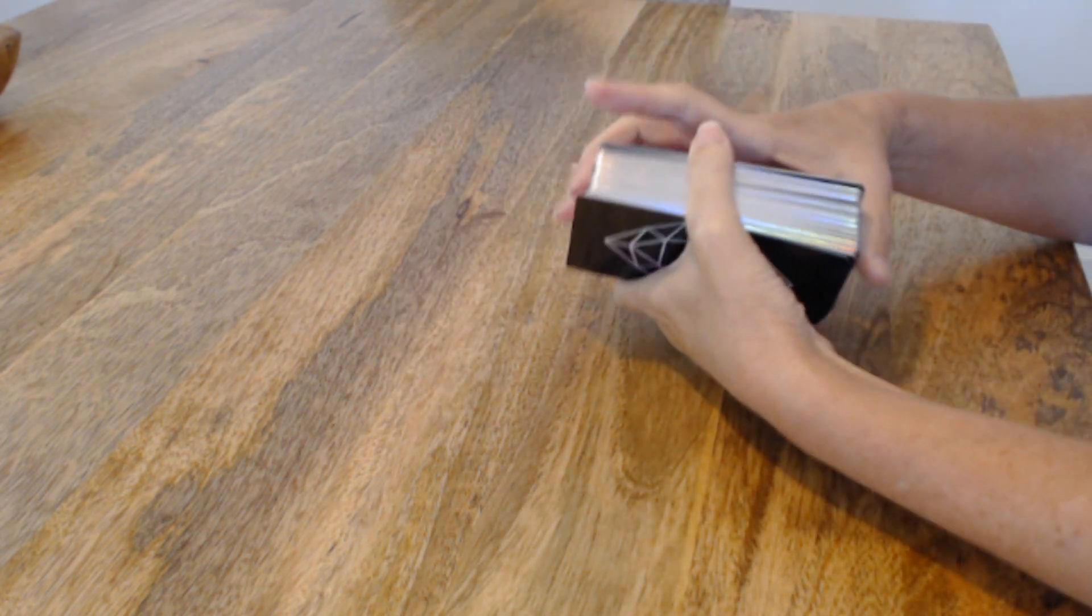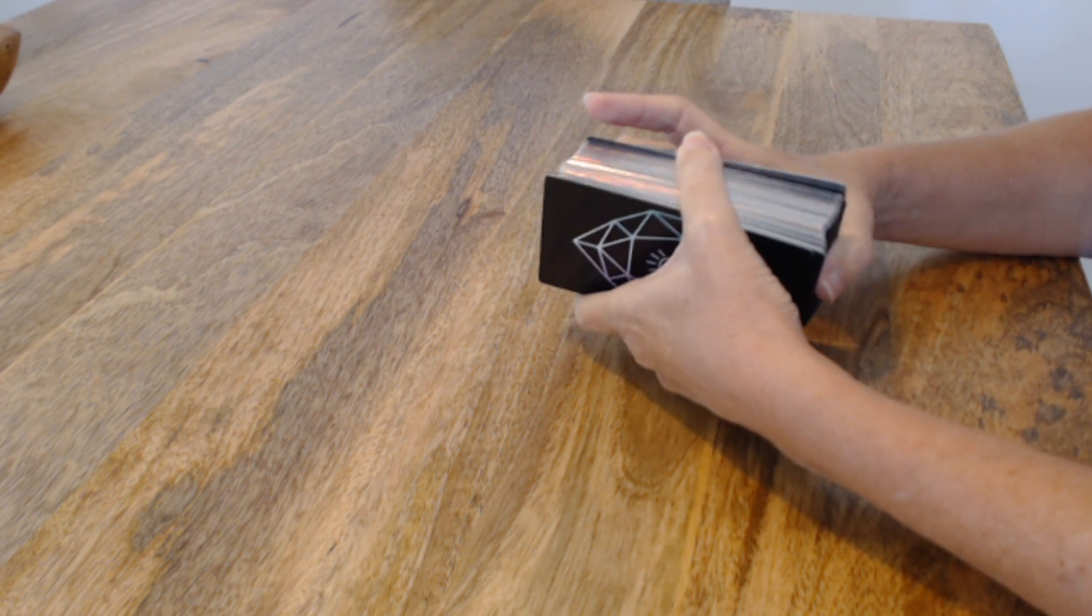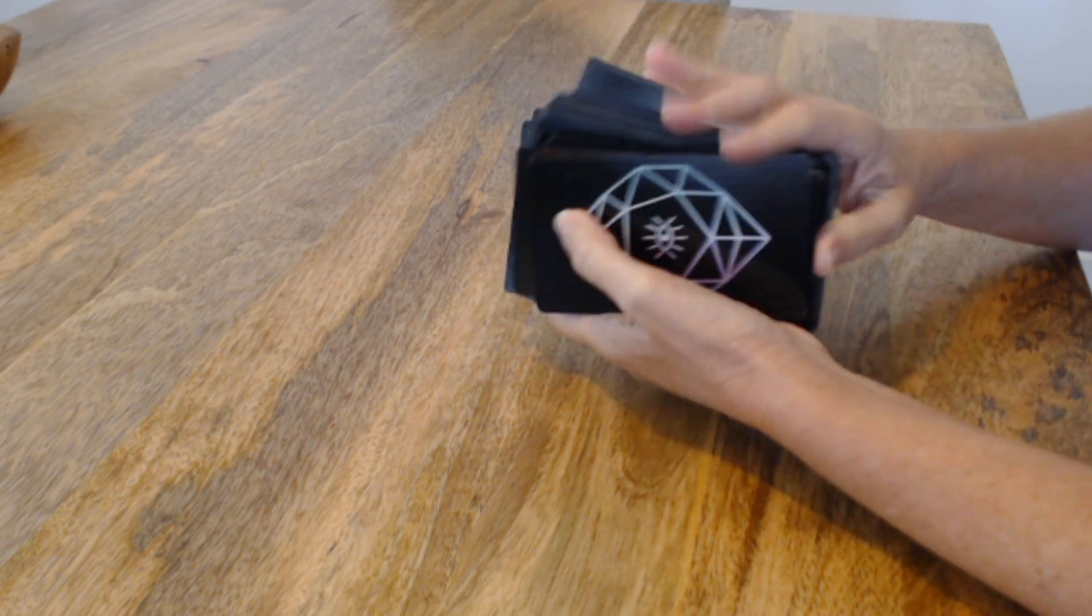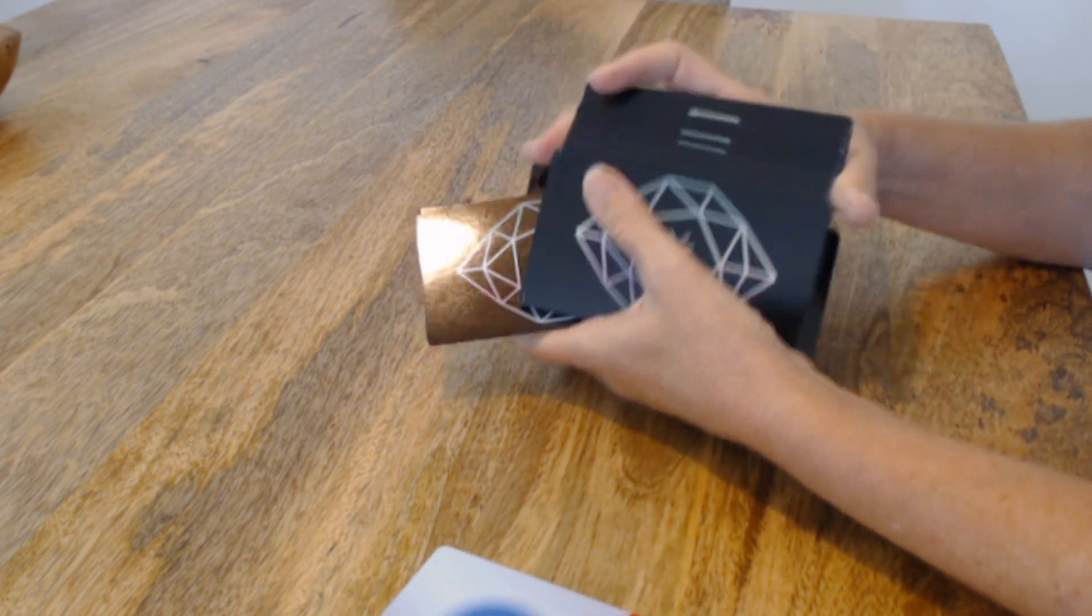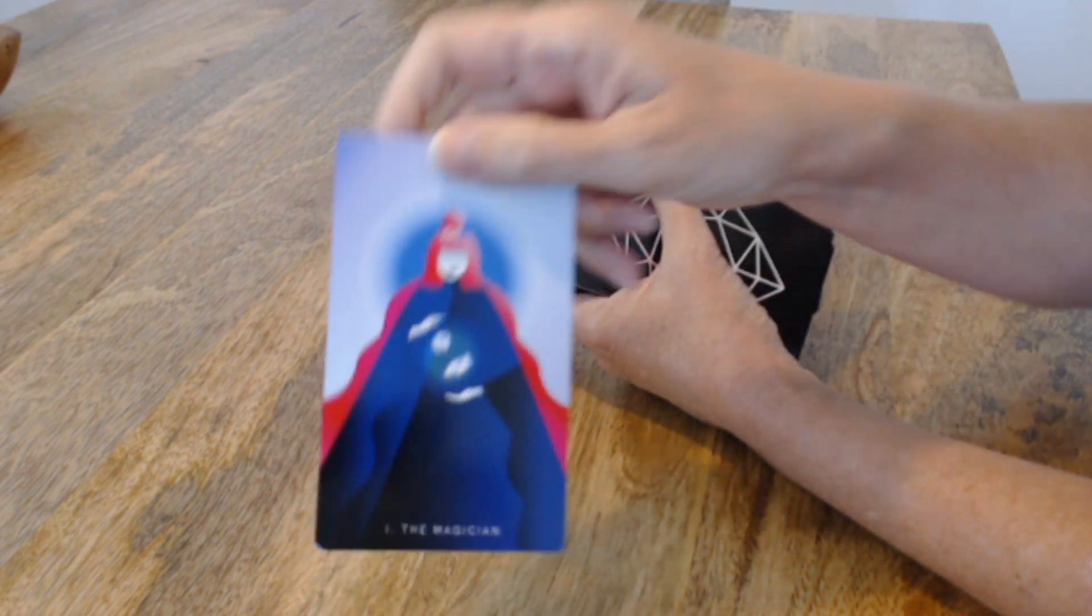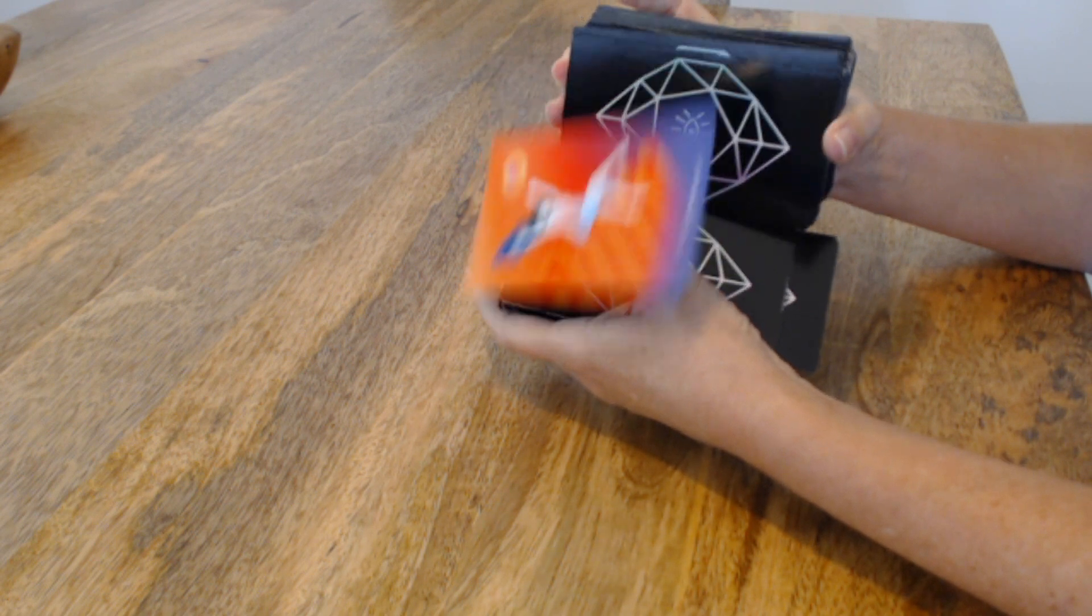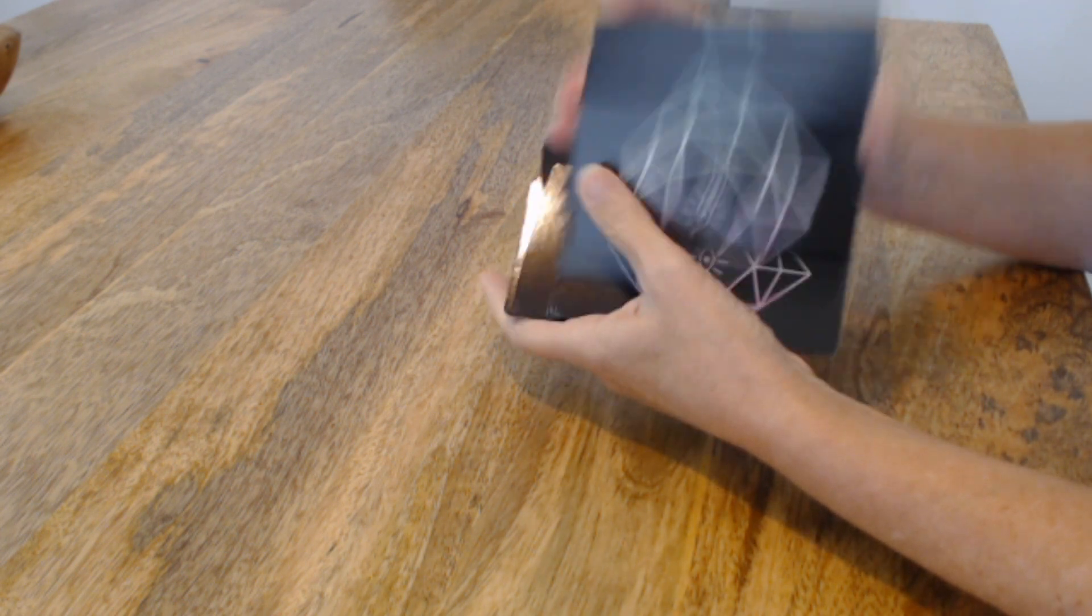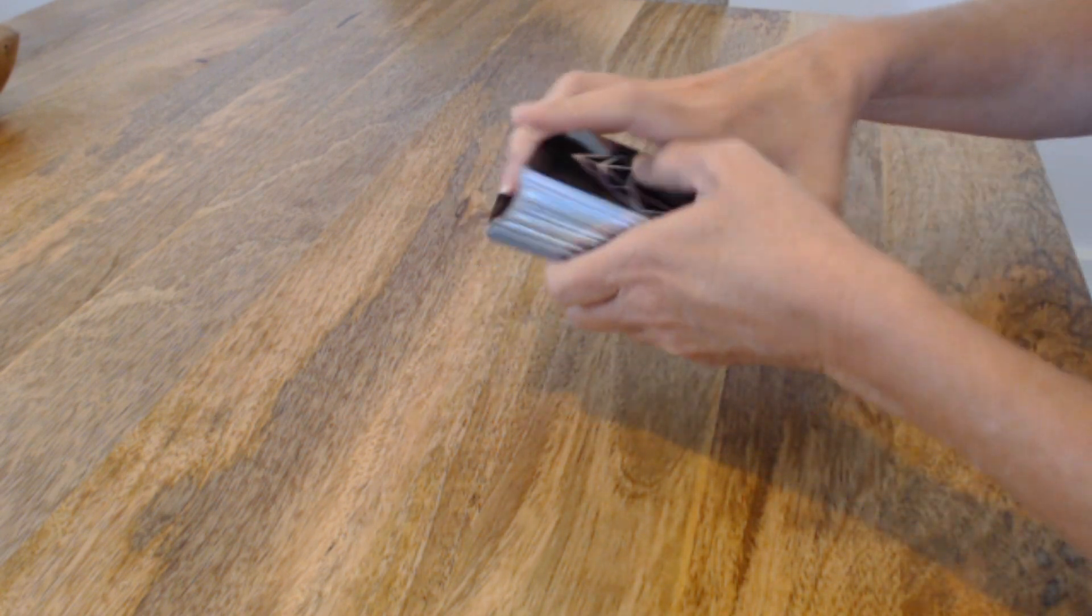So the moon has now moved into Leo, so I'm going to do a general reading for Leos. Now the magician popped out. So that's good. Well, all kinds of cards are trying to pop out, let's see, they must be ready to go. I've been shuffling them a lot, so let's just go.